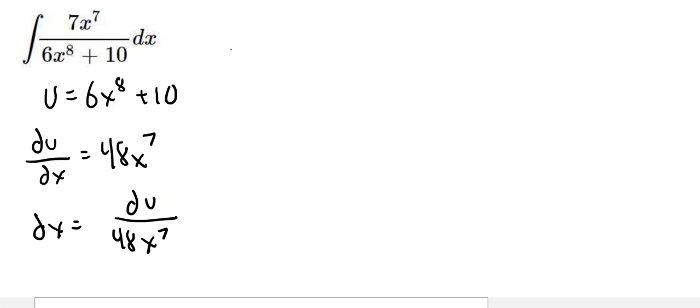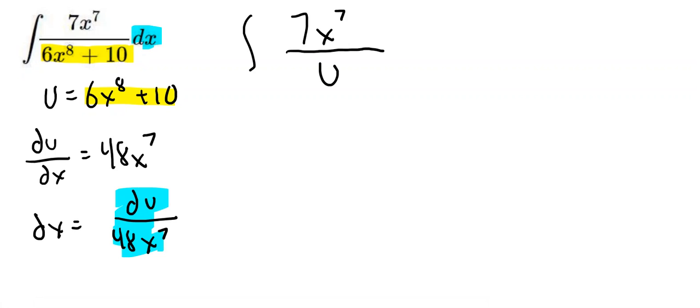Here's how we would do the u-substitution on this. We're going to have the integral of 7x^7, and in the denominator, this quantity is now my u. Then the dx is now du over 48x^7. So du is in the numerator, and 48x^7 is in the denominator. See how nicely these x^7 terms cancel out.